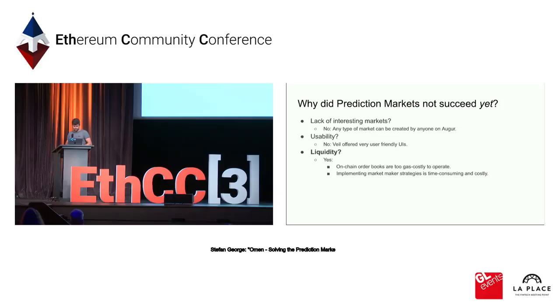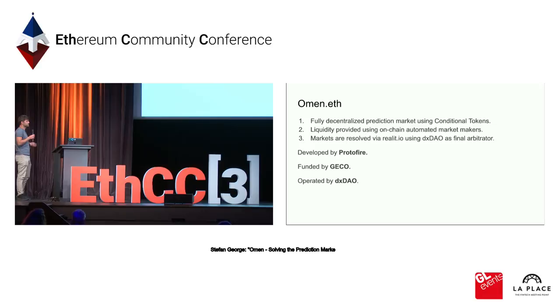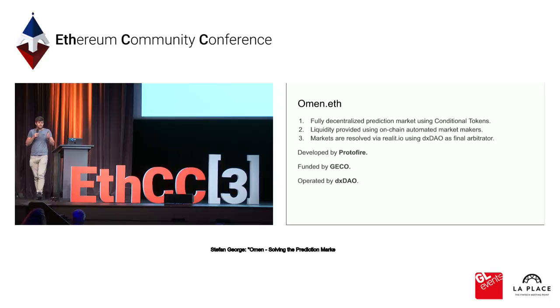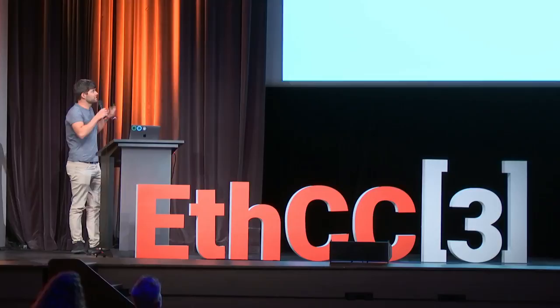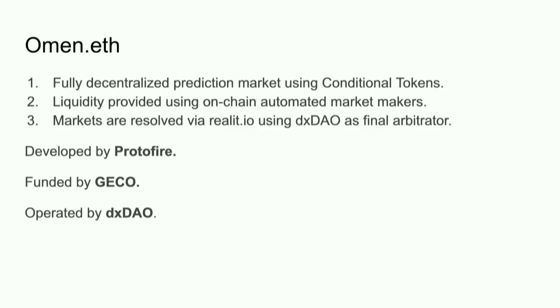So here is where OMEN comes in. OMEN is a fully decentralized prediction market. It is using the Gnosis conditional tokens framework. It is using another type of market mechanism, which is an automated market maker — something like Uniswap that most of you know — used here to allow traders to trade on those markets. And as an oracle mechanism, we use a combination of the RealityIO platform together with the DXDAO.